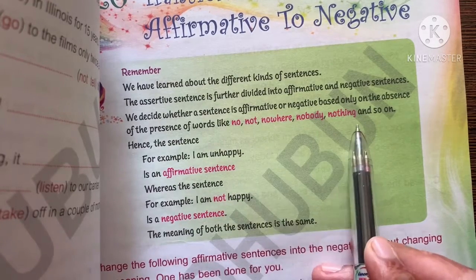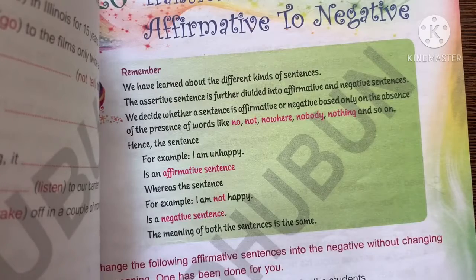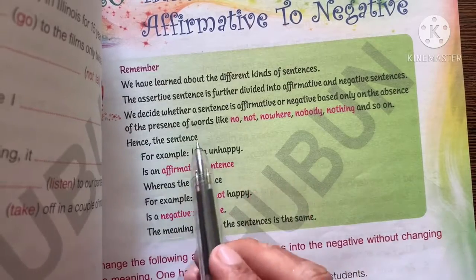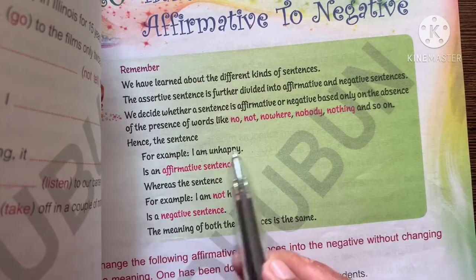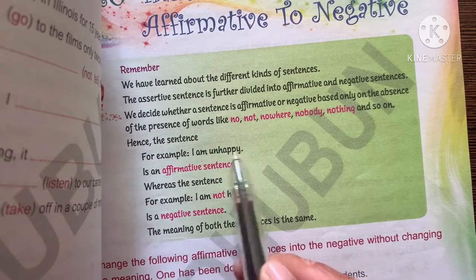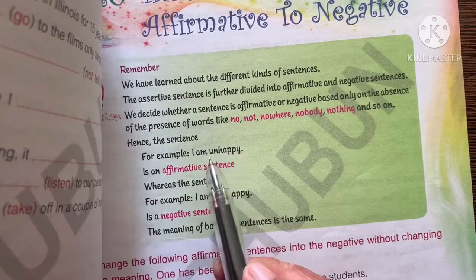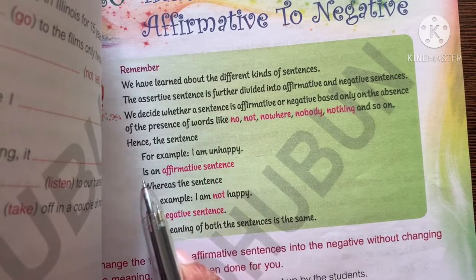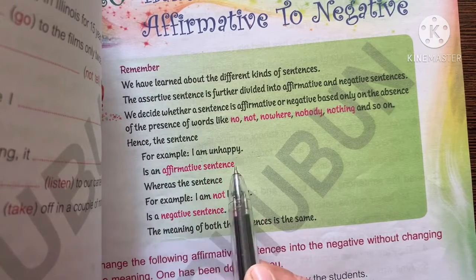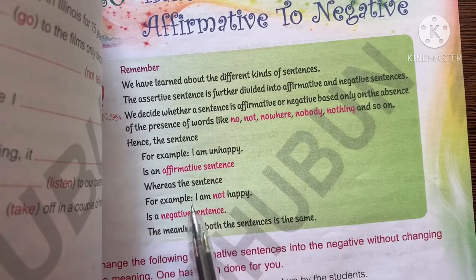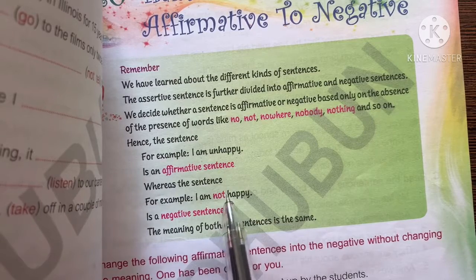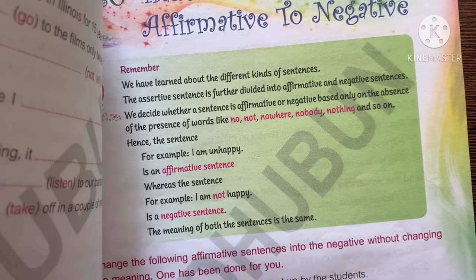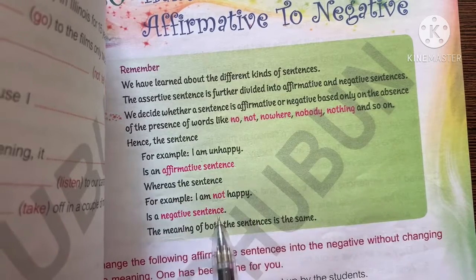There are some other words also which we can use in the negative form: do not, does not. For example, 'I am happy' — this is an affirmative sentence because it is in positive form, meaning 'I am happy.' Whereas 'I am not happy' — the highlighted word 'not' puts it in negative form, meaning 'I am not happy.' So this becomes a negative sentence.